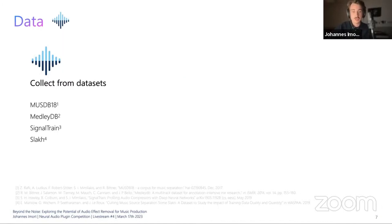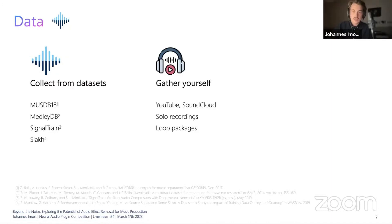There are three options to collect the dry data. The first is to collect source data from public data sets. For example, MuseDB 18, originally proposed for music source separation, contains stems for drums, bass, vocals, and other instruments. Then there's MedleyDB, where unaffected stems are available but you need to pick them manually. There's also Signal Train, which contains various mixtures and test signal sounds, and also Slack, which is a synthetic data set.